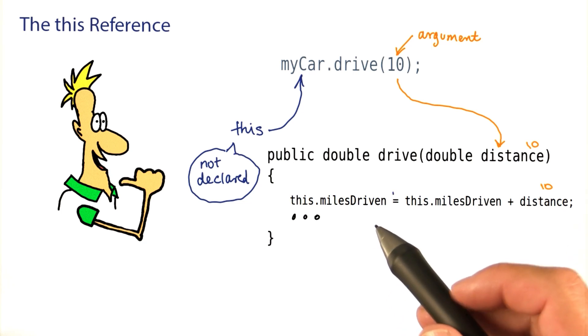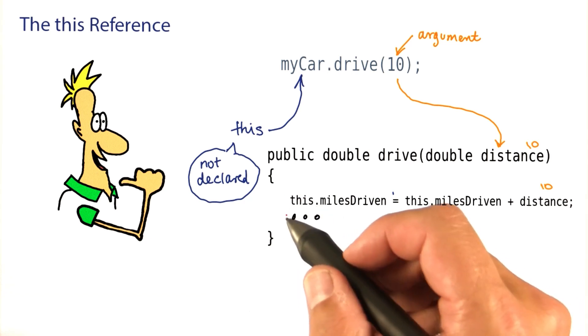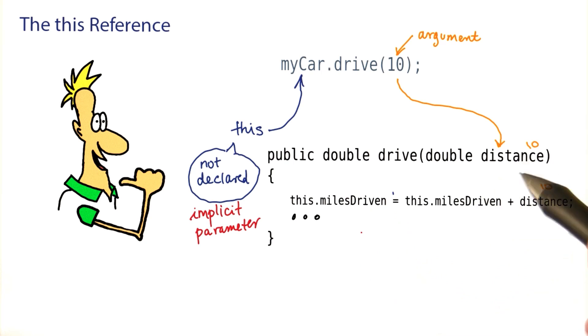A bit of terminology, by the way. This is sometimes called the implicit parameter, because it's never declared. It's implicit in the definition of a method, and a parameter such as this one here is called an explicit parameter.